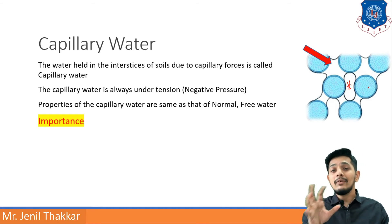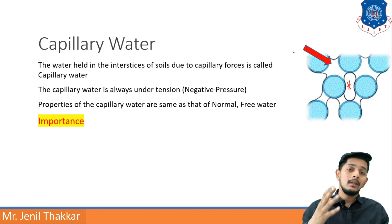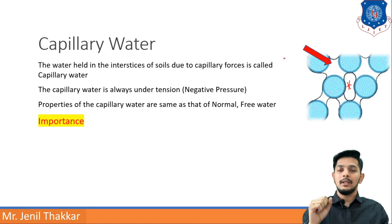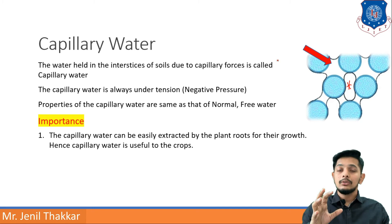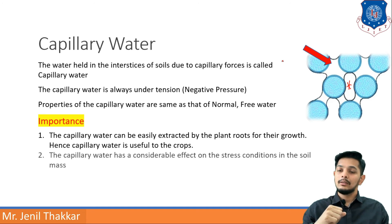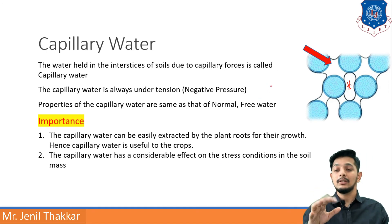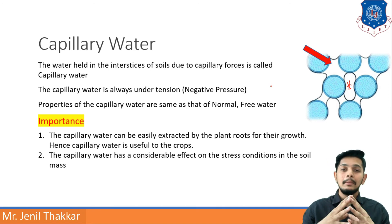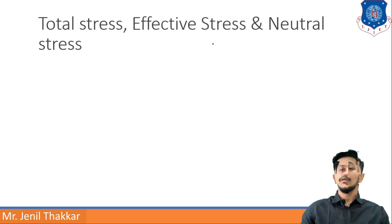This figure illustrates every type of soil water. Regarding the importance of capillary water: first, capillary water can be easily extracted by plant roots for their growth, making it very useful to crops. Second, capillary water has a considerable effect on the stress conditions in the soil mass, as it diffuses the stresses.